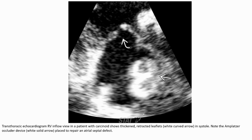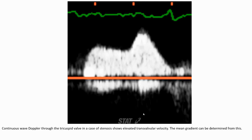This image shows a secondarily retracted leaflet. We can also note an atrial septal defect occlusion device placed to repair the anterior septal defect. We can observe the blood flow through the tricuspid valve in a case of stenosis with elevated trans-valvular velocity, and the mean gradient can be determined from this.